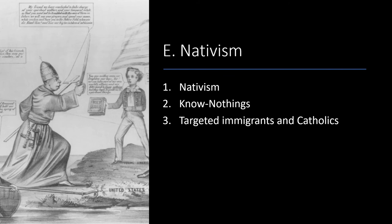A Know-Nothing cartoon shows the Catholic Church supposedly attempting to control American religious and political life through Irish immigration. As nativism expanded, the influential political group known as the American Party, or Know-Nothing Party, formed. It was secretive, with members agreeing not to vote for Catholics or foreign-born candidates. They got their name because when asked their position on any topic, they said 'I know nothing,' thinking that not taking a stand might help get them elected. Nativists targeted immigrants and Catholics, doing whatever they could to keep them from becoming American citizens.